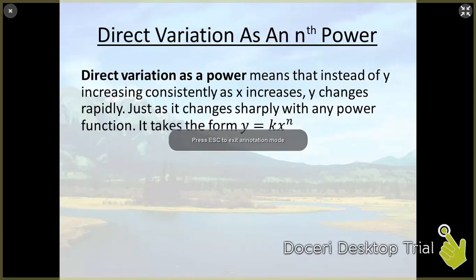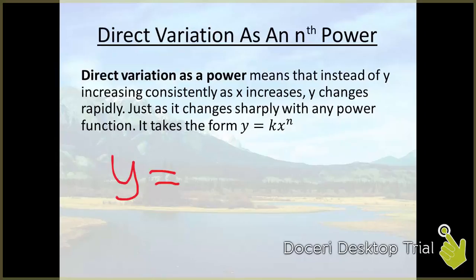So going back just one second, when we talked about direct variation, our formula was y equals kx, where k was a constant. The only difference between that and this is that that x has a power on it.